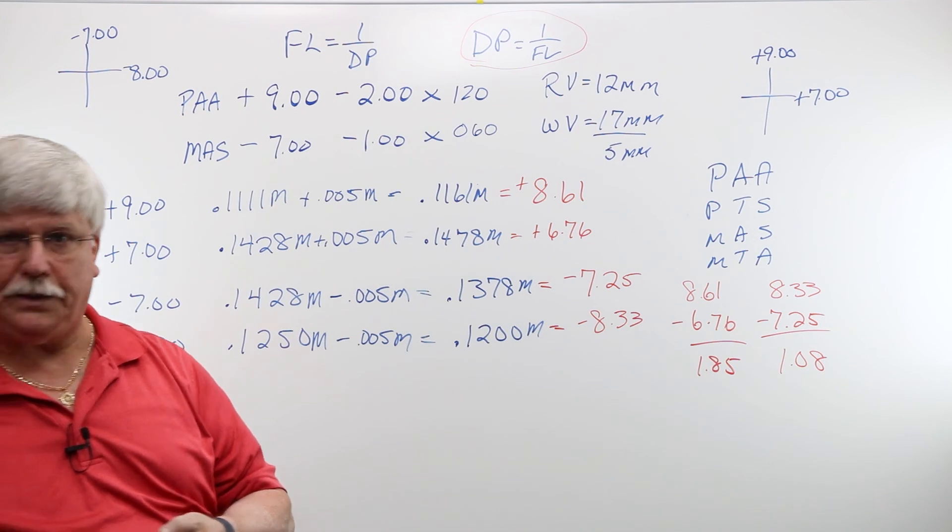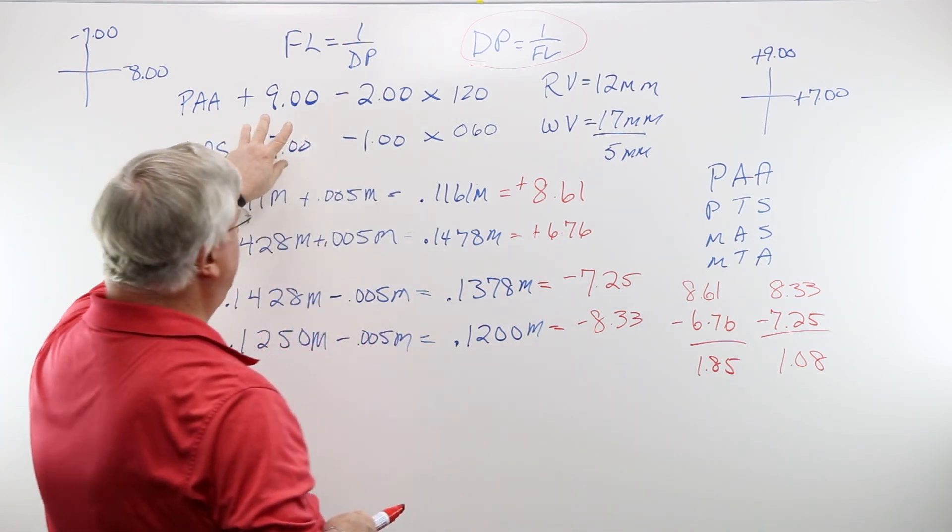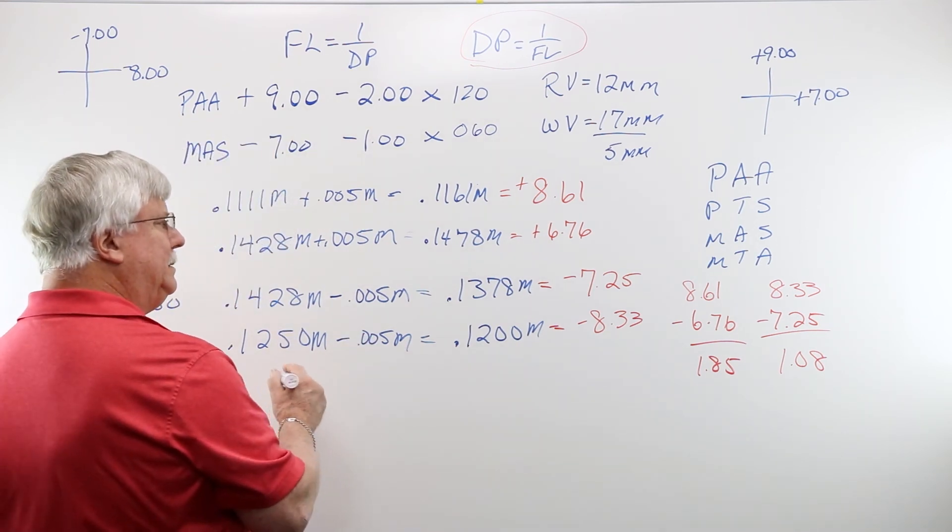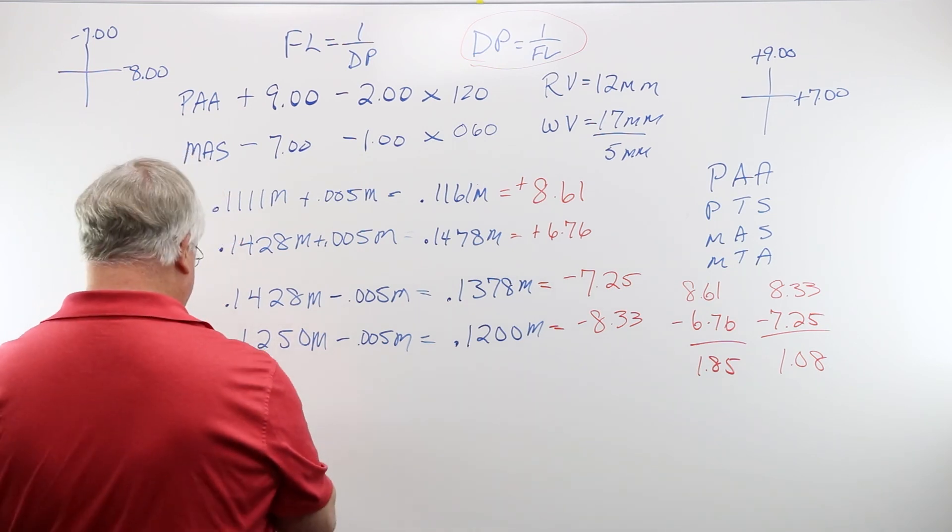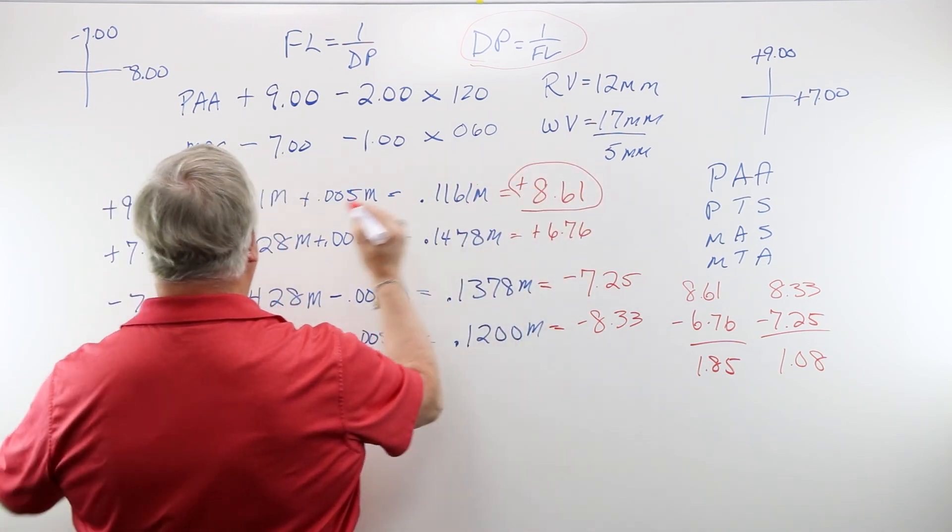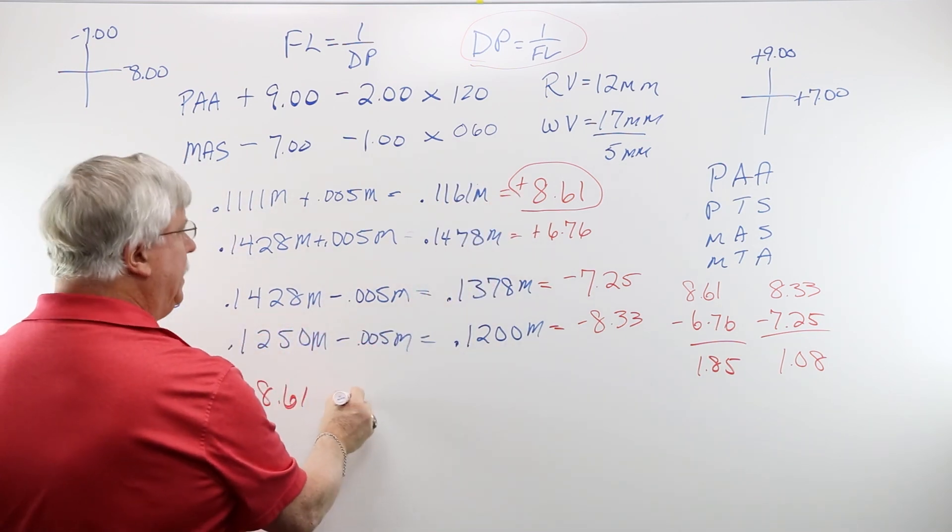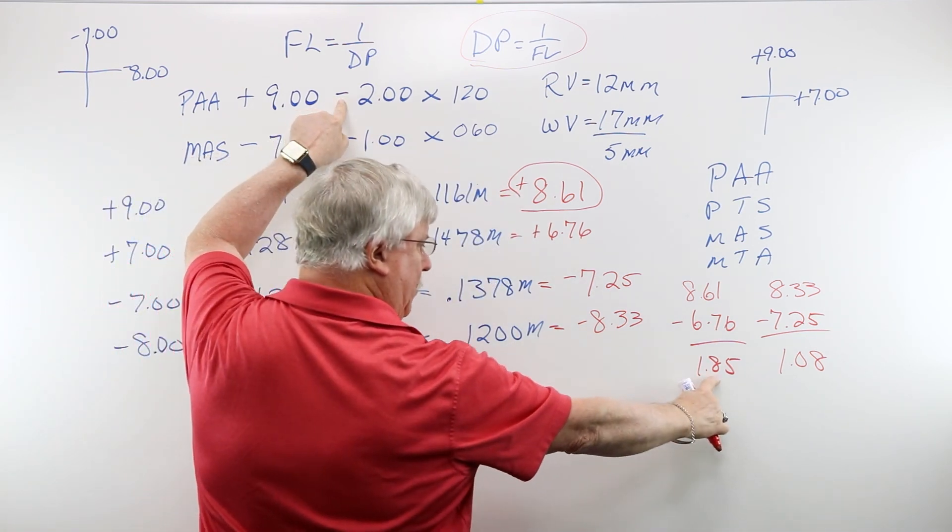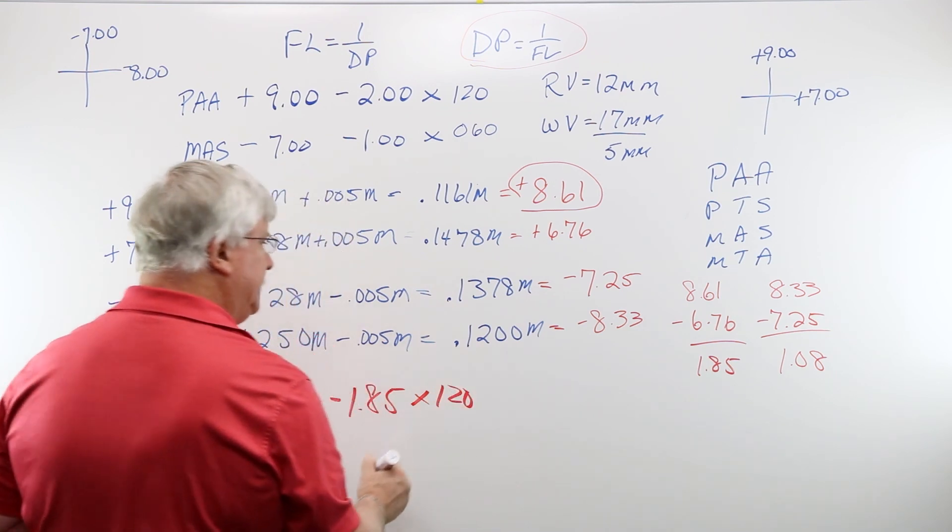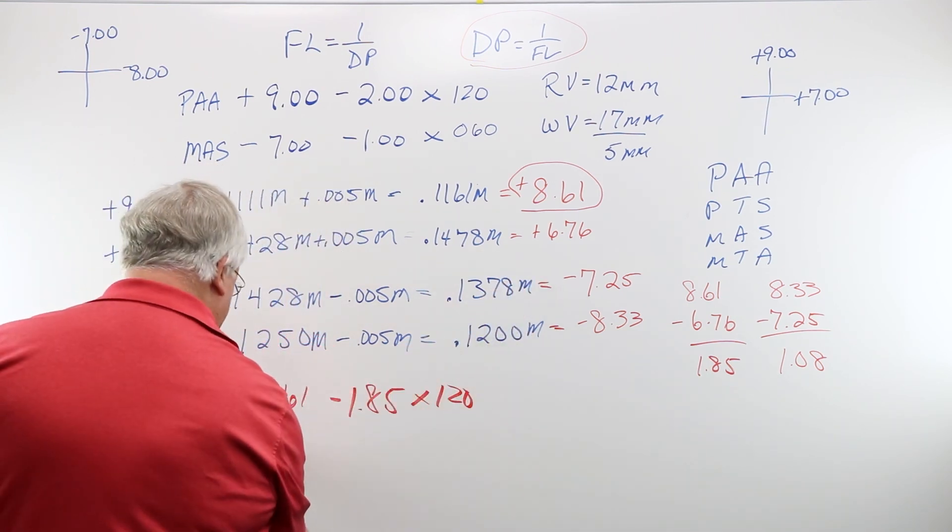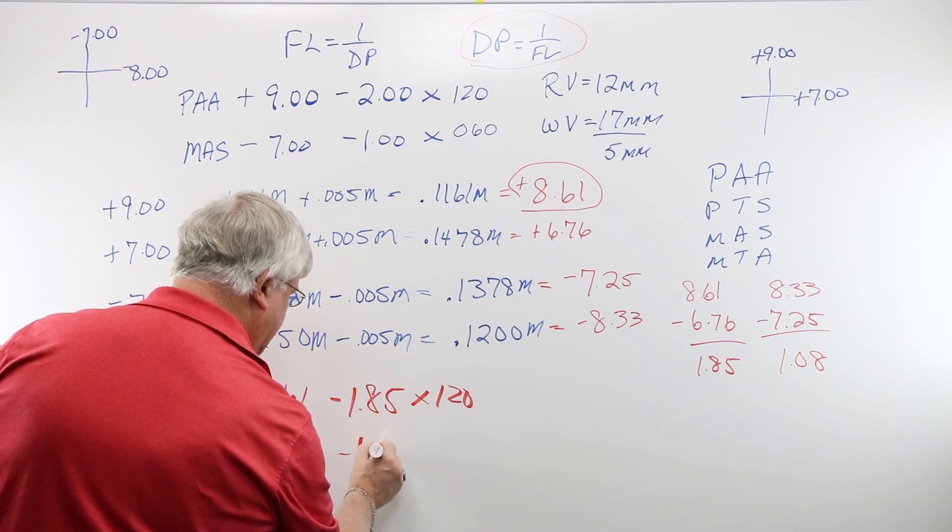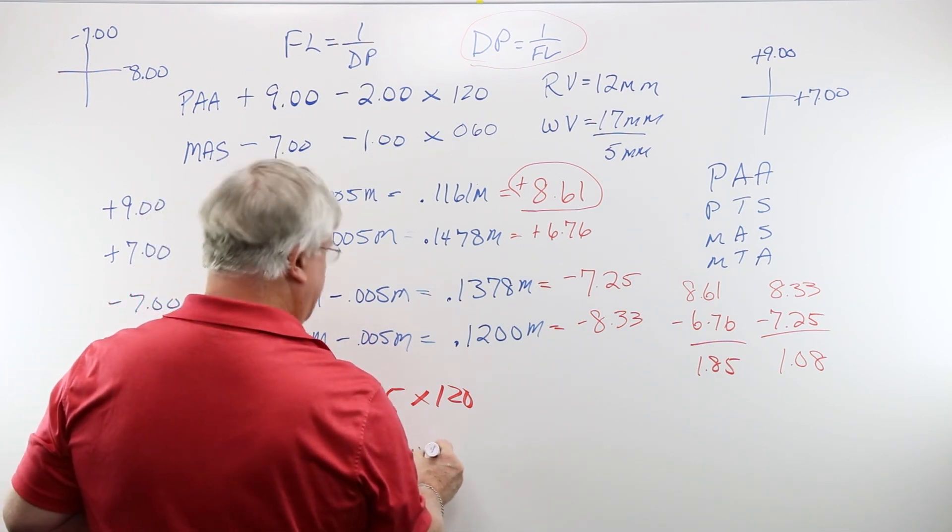We started with this prescription. Now we're going to find out what the prescription is with vertex distance compensation. We have plus 8.61, which is my original sphere power converted over, minus 1.85 at axis 120. And then we have minus 7.25 minus 1.08 at axis 060.